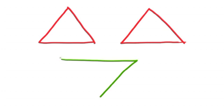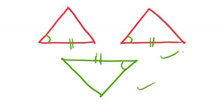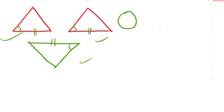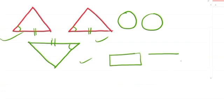For congruent triangles, both corresponding sides and corresponding angles must be congruent — both sides and angles have to be equal. Similarly, we can identify congruent circles, congruent rectangles, and other figures easily.